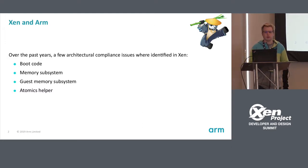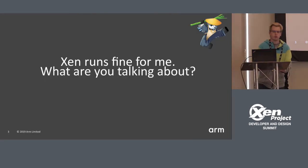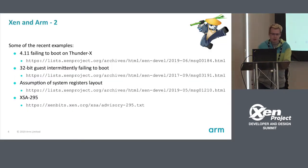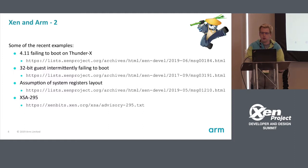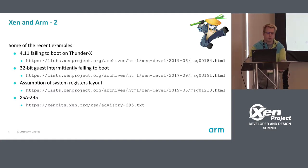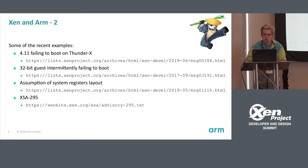Every time I'm speaking about Xen and someone hears there's a compliance issue, they always ask: 'But Xen is running fine for me, what are you talking about?' I've been listing some recent examples. A few weeks ago, Xen 4.11 was failing to boot on some devices because we were not following the ARM ARM. For the past couple of years, 32-bit guests were failing to boot roughly once a week, and it took us more than a year to figure out — again, because we were not following the ARM ARM.